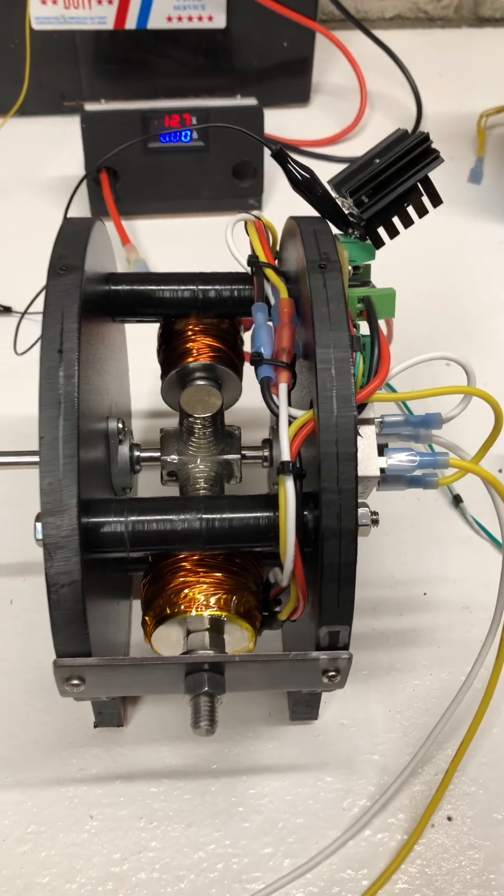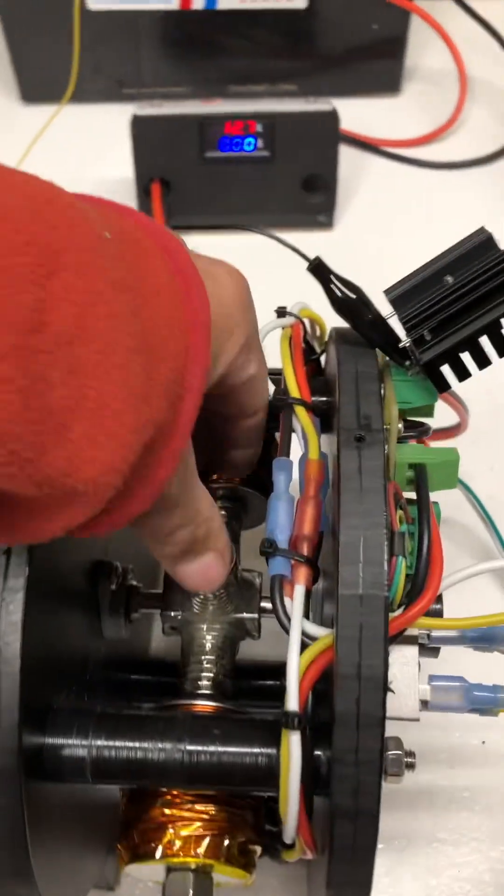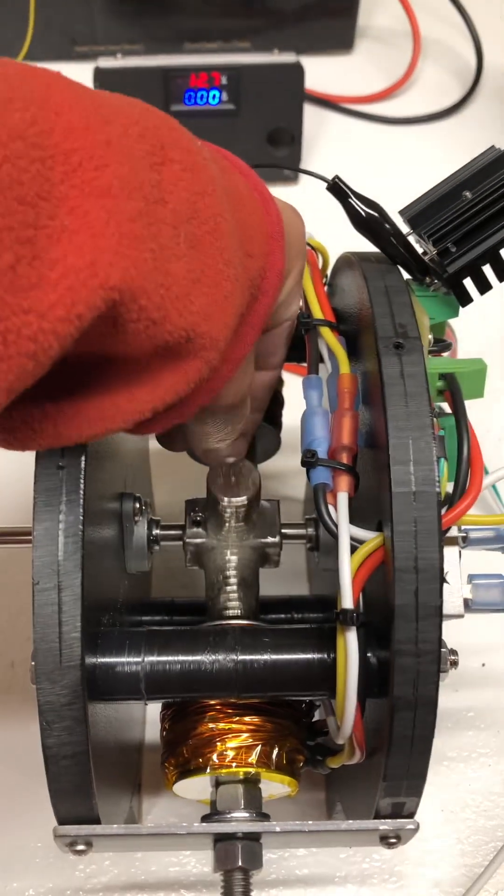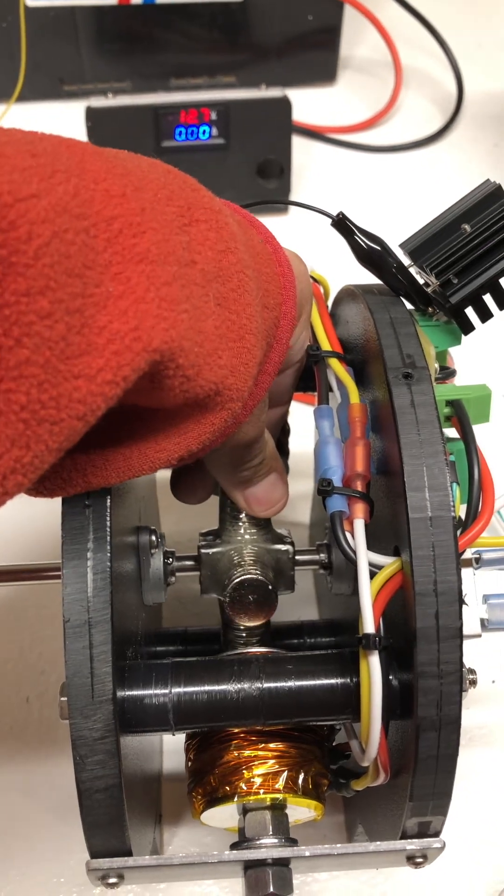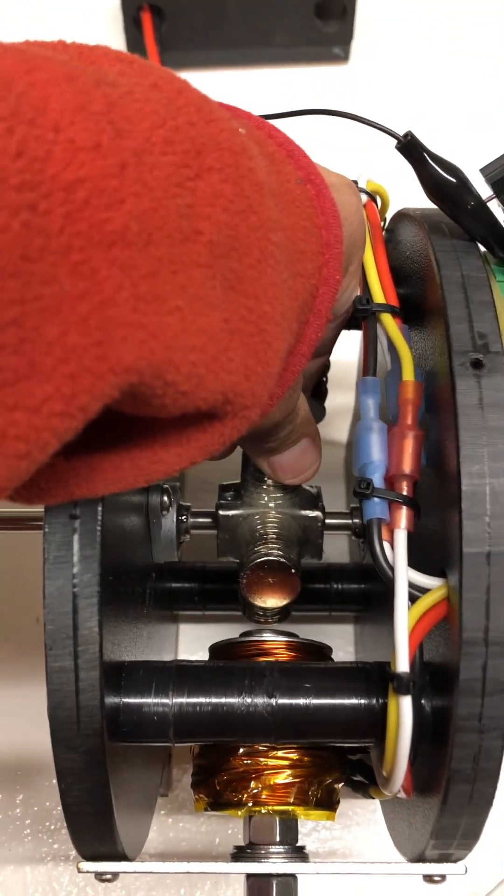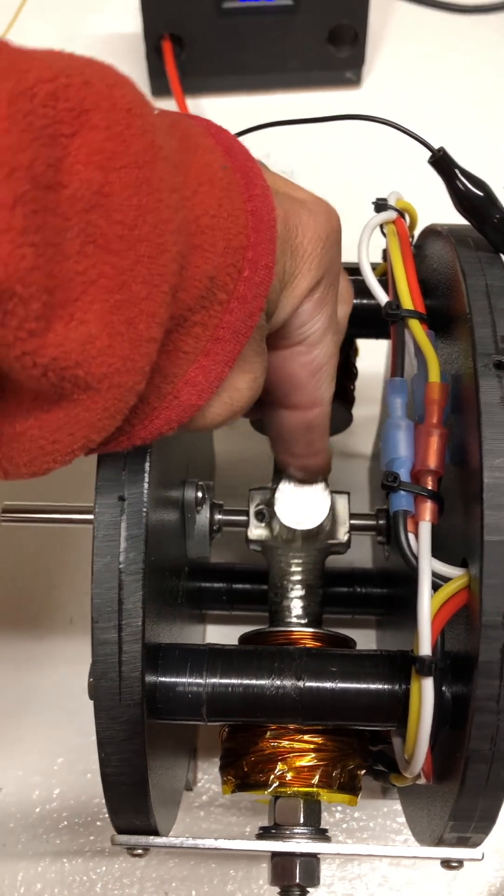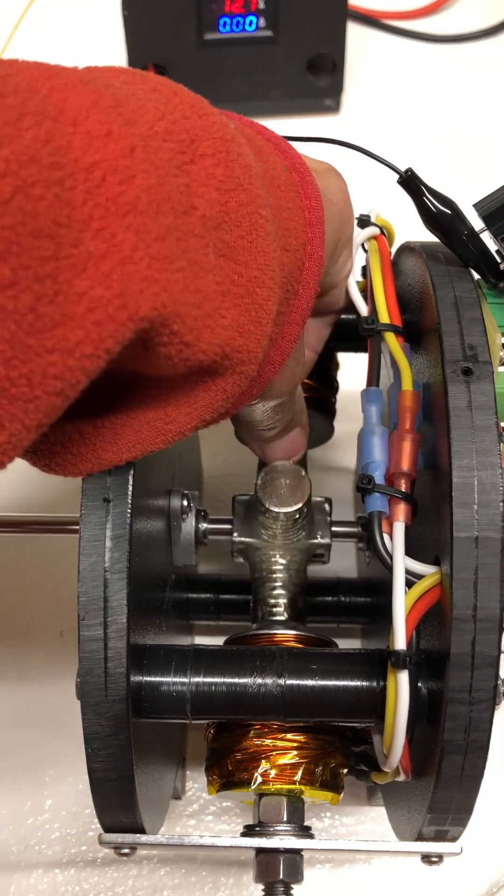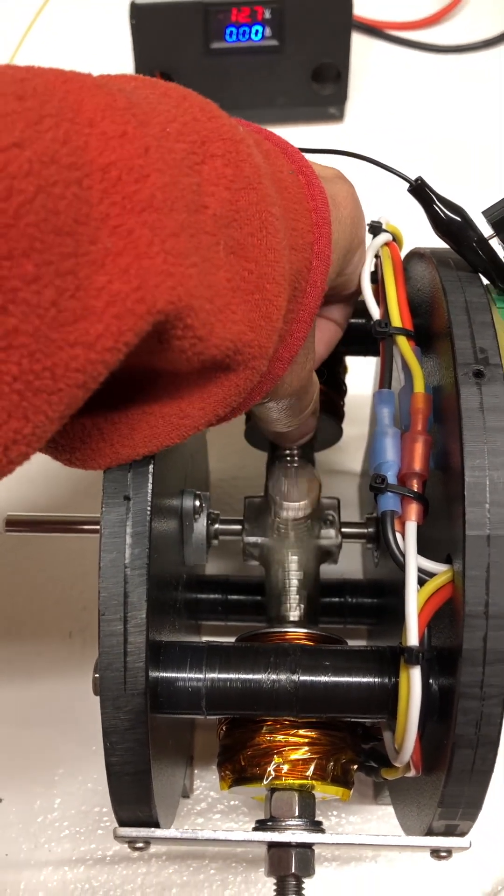This motor here is very torquey because, as you can see here, it has a lot of pull to the electromagnets. So half the power of the motor is actually just the magnet itself.